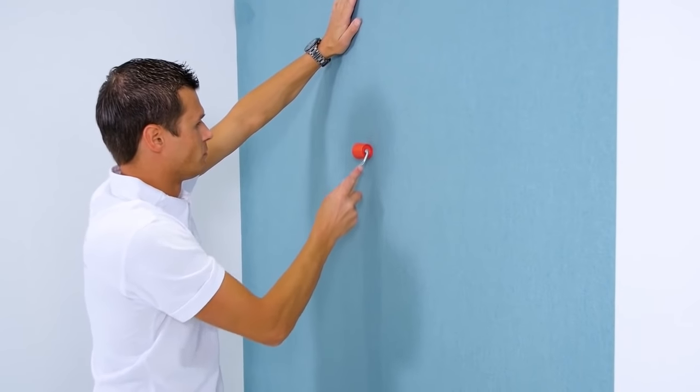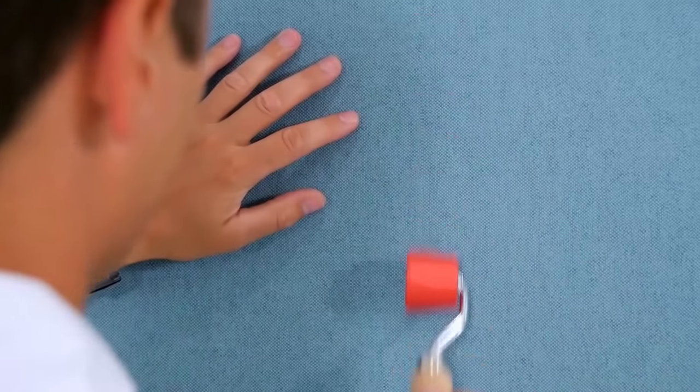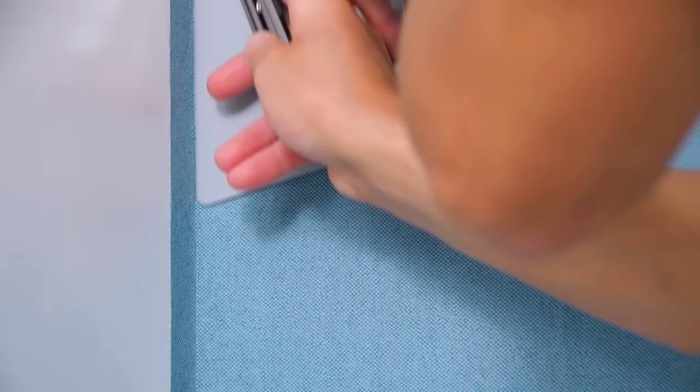Press the seam between the two strips with the seam roller. Cut off the surplus piece in the corner against the floor and the ceiling.